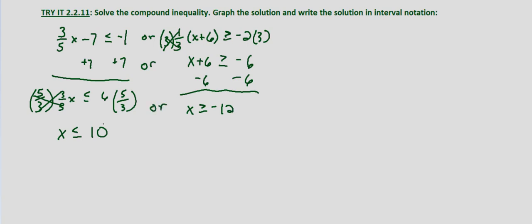So the two parts of our simplified compound inequality are x is less than or equal to 10, or x is greater than or equal to negative 12.